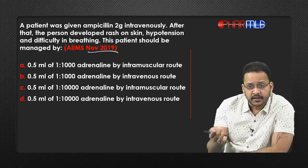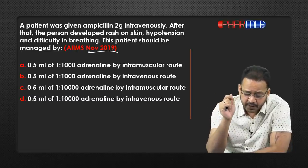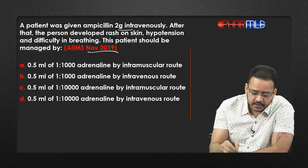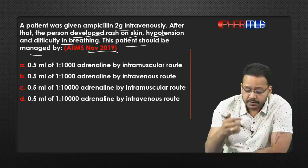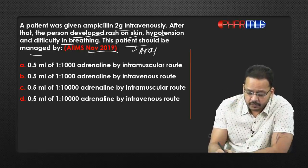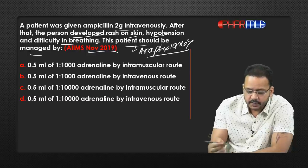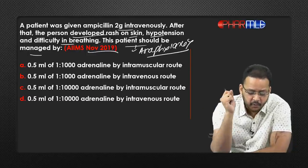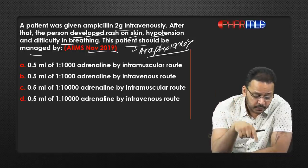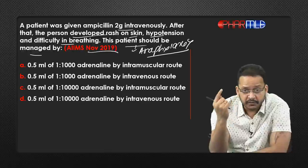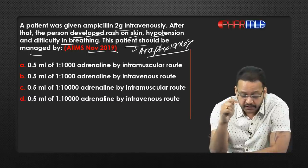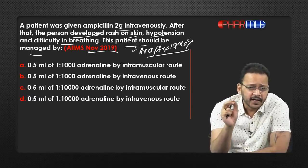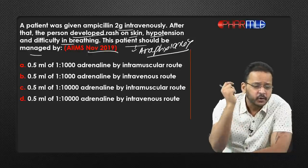AIIMS November 2019 — the last AIIMS exam. A patient was given ampicillin 2 grams intravenously and developed rash, hypotension, and difficulty in breathing — anaphylaxis. The patient should be managed by: Option A: 0.5 mL 1:2000 intramuscular; Option B: 0.5 mL 1:2000 intravenous; Option C: 0.5 mL 1:1000 intramuscular; Option D: 0.5 mL 1:10,000 intravenous.